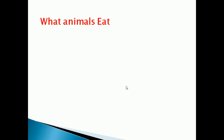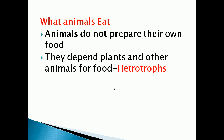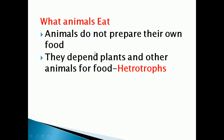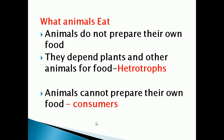Now we can see what these animals eat. Animals do not prepare their own food. They depend on plants and other animals for food, so they are called heterotrophs. Animals cannot prepare their own food; they consume food from plants and other animals, so animals are also called consumers.